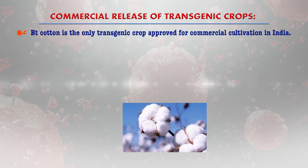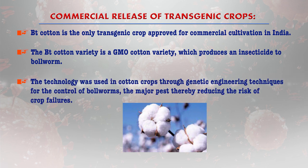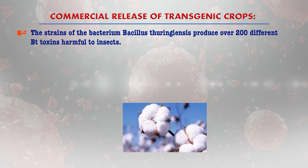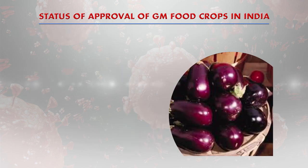BT cotton is the only transgenic crop approved for commercial cultivation in India. BT cotton is a genetically modified cotton variety that produces an insecticide against bollworms. The technology was used through genetic engineering to control the bollworm, which was the major pest, thereby reducing the risk of crop failure. Different strains of the bacterium Bacillus thuringiensis produce over 200 different BT toxins harmful to insects. BT cotton was approved by the Genetic Engineering Approval Committee in India in 2002 in nine cotton-growing states: Andhra Pradesh, Gujarat, Haryana, Karnataka, Madhya Pradesh, Maharashtra, Punjab, Rajasthan, and Tamil Nadu — after extensive biosafety and agronomic testing.